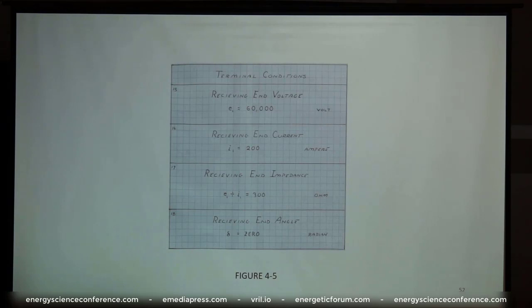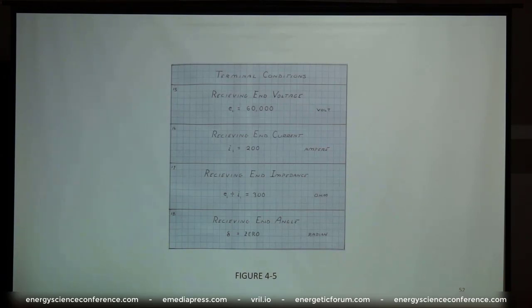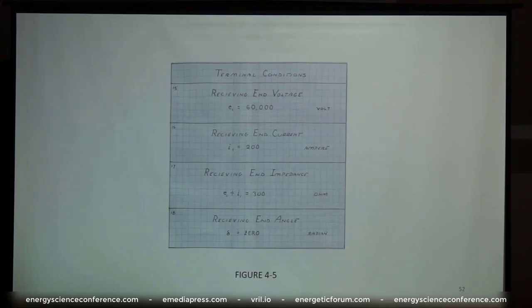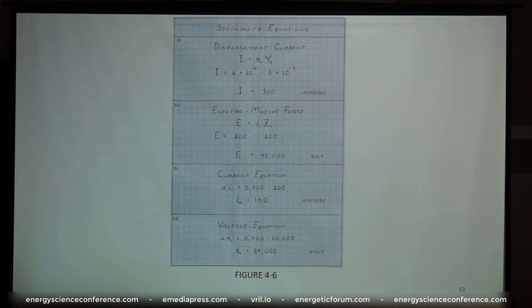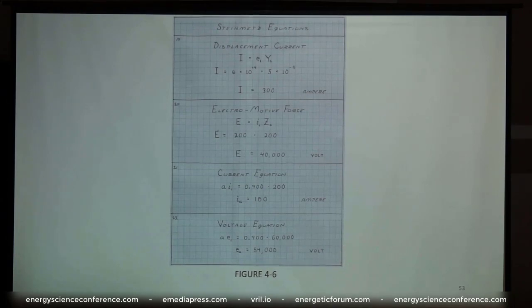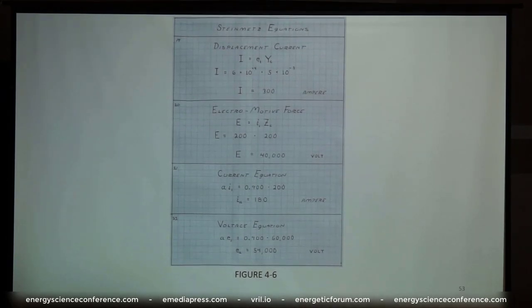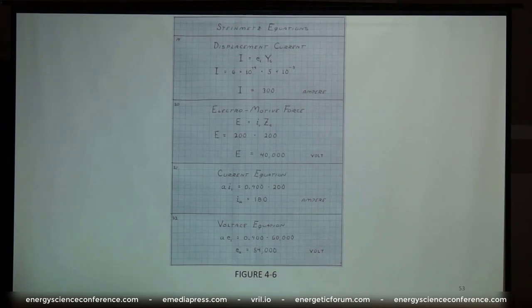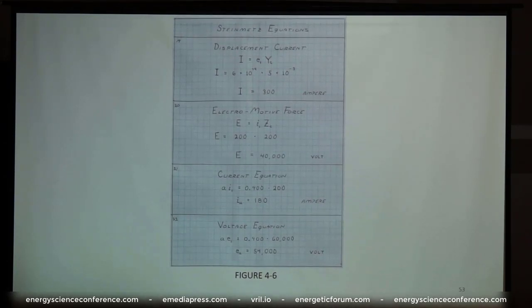Because we're going to start our clock at the end of the line phase-wise, the distance angle is zero at the end of the line. So we're going to do all of our calculations and measurements from the receiving end of the line, because everything is set such that the receiving end delivers the normal established voltage of 120V or whatever is derived from it by the transformer ratio. From our prior measurements and Steinmetz's equations, we come up with the displacement current of the line, which is basically the product of the potential of the line and the natural admittance of the line. So the displacement current of the line is 300 amperes.